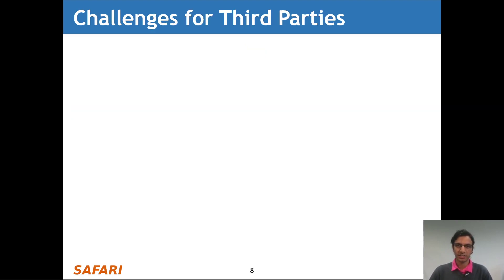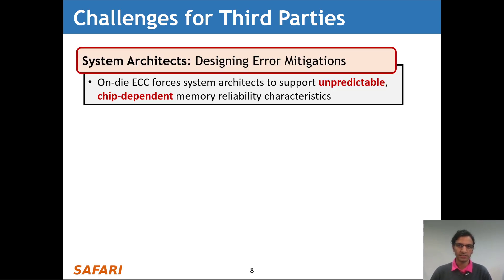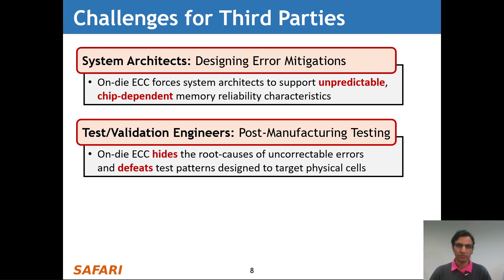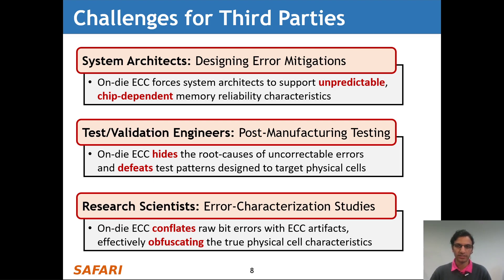Our takeaway is that the same error characteristics can appear very different with different ECC functions. This causes significant challenges for third parties who need to understand DRAM reliability characteristics. System architects must support unpredictable chip-dependent memory reliability characteristics. Test and validation engineers find that on-die ECC hides root causes of uncorrectable errors and defeats test patterns designed to target physical cells. And research scientists find that on-die ECC conflates raw bit errors with ECC artifacts, effectively obfuscating the true physical cell characteristics.